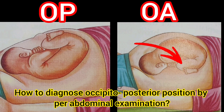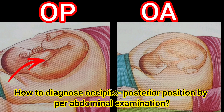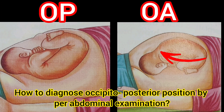In Occipitoposterior position, the anterior shoulder of the baby is away from the midline, whereas in Occipitoanterior position, the anterior shoulder of the baby is towards the midline.